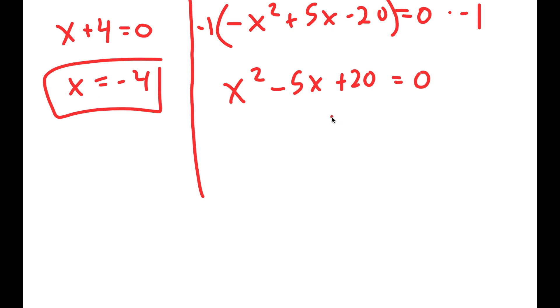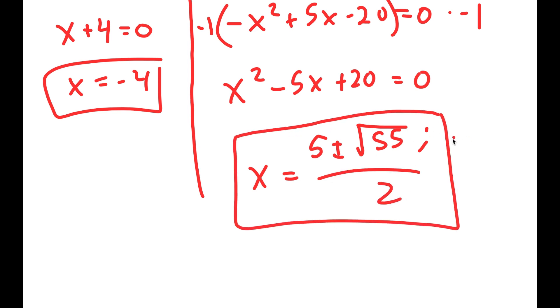And I can solve this by using quadratic formula. So I get x = (5 ± √55i)/2. So these are two more solutions.